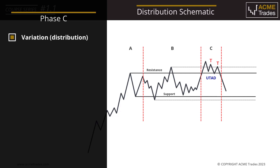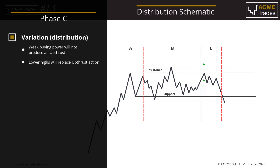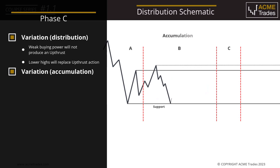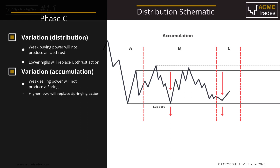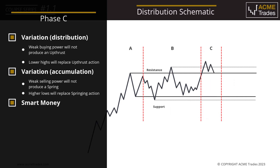A caveat of Phase C — an alternative — is if demand, the buying power, is weak. There may not be enough force to print an up thrust, and literally it will make lower highs. It's the same with Phase C within accumulation: if the selling force is weak, there's not enough selling force to break through support to reverse. The smart money has done a good job of mopping up supply. This can make labeling Phase C a little more difficult.